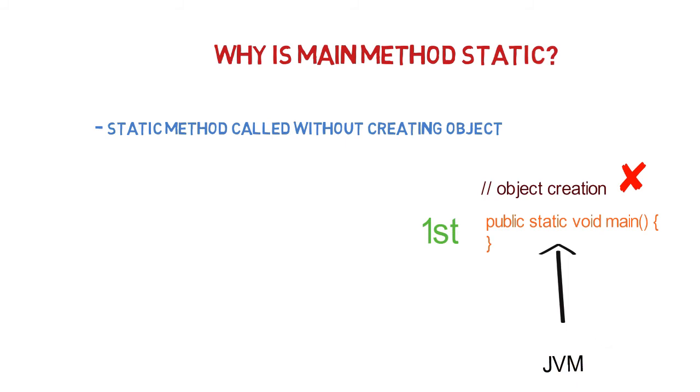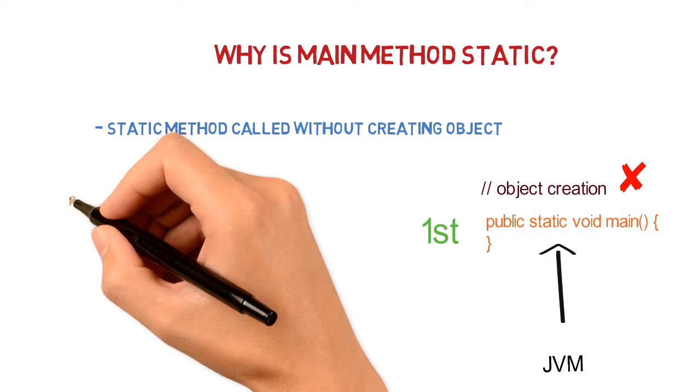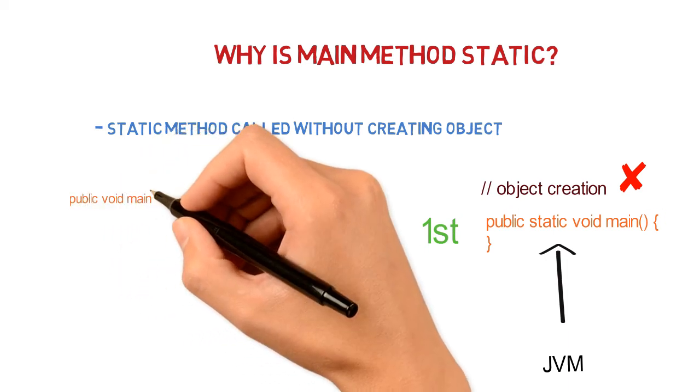Now remember, JVM calls the main method and it is not going to look for any object to call the main method. It is directly going to call the main method through static keyword through the class. So that is why we make main method as static. Now what will happen if we don't make main method static?